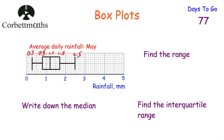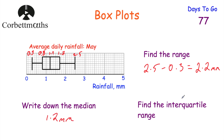Now we can work out the answers. The range is found by doing the largest take away the smallest: 2.5 subtract 0.3 equals 2.2 millimetres. The median is 1.2 millimetres. And the interquartile range, remember from yesterday's video, is found by doing the upper quartile subtract the lower quartile: 1.7 subtract 0.8 equals 0.9 millimetres. So we've found the range, the median, and the interquartile range from this box plot.